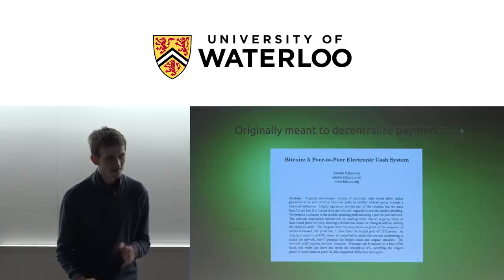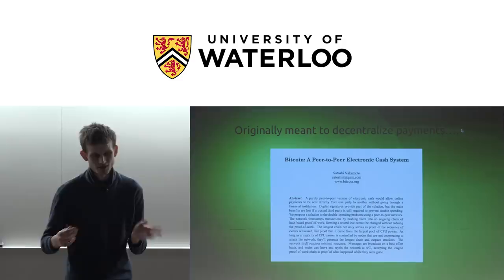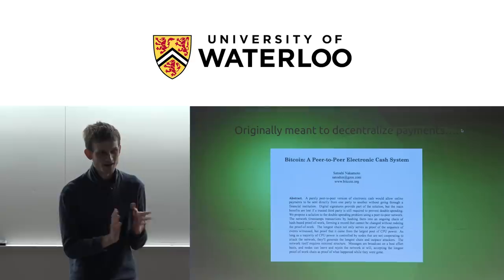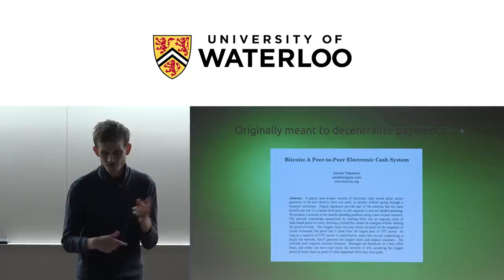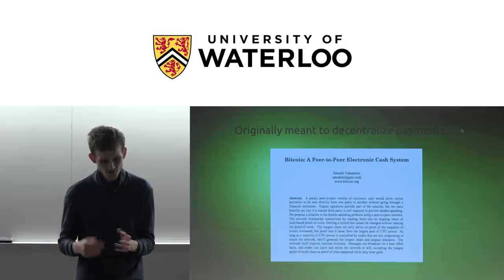The problem that people were trying to solve with launching a peer-to-peer digital currency was the double spending problem. There was this cypherpunk movement that wanted to create decentralized, central authority-independent versions of things. For file sharing and encrypted messaging, people can send files and messages to each other over the internet. But turns out currency is harder, because of the double spending problem.